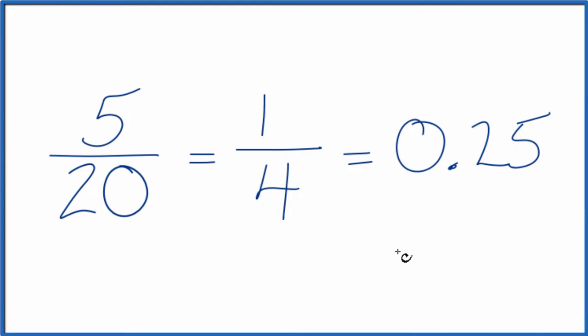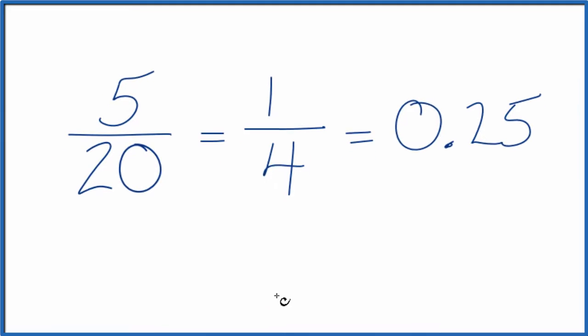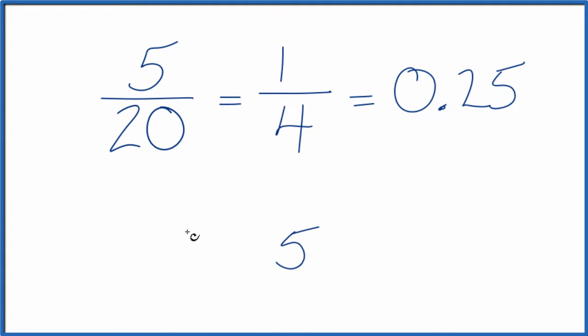We can also do this longhand, because what we're asking is 5 divided by 20, what is the decimal? So we could put 5 and divide that by 20. 20 doesn't go into 5. Let's call it 50, and we'll put 0 and a point here.